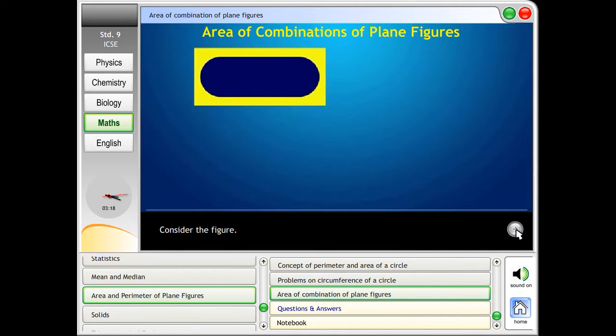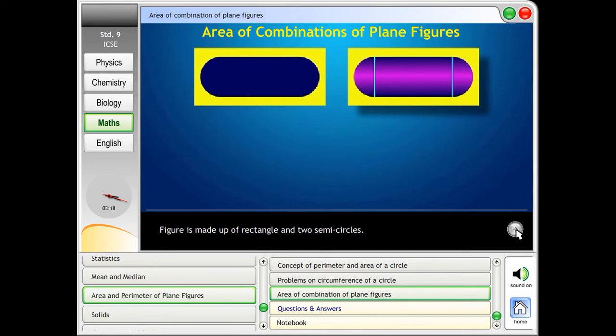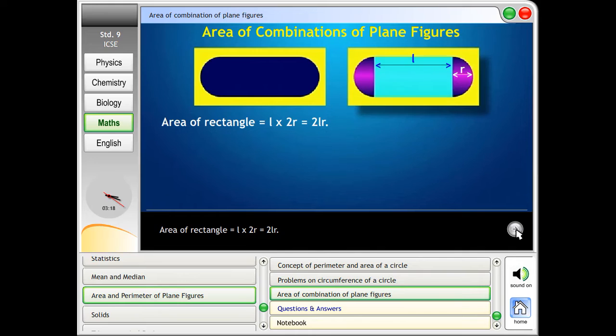Consider the figure. The figure is made up of a rectangle and 2 semicircles. Area of rectangle equals L into 2R equals 2LR.